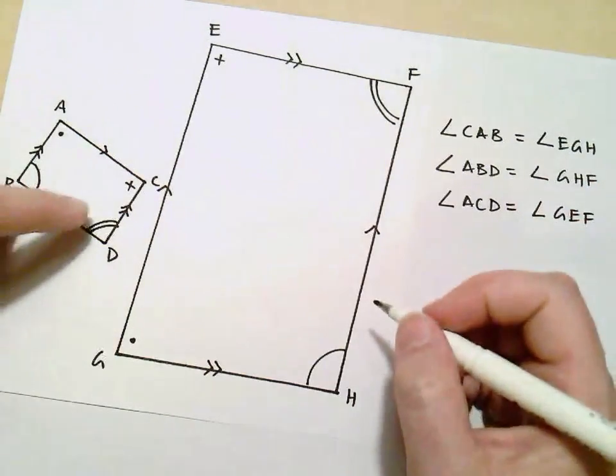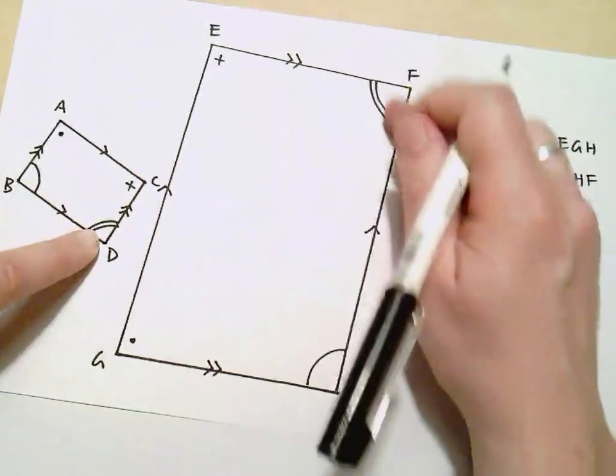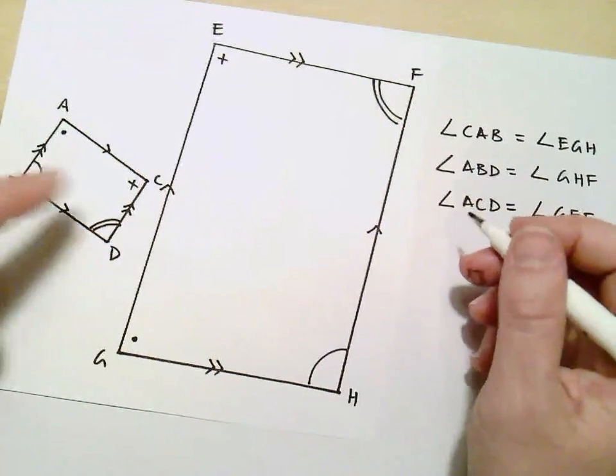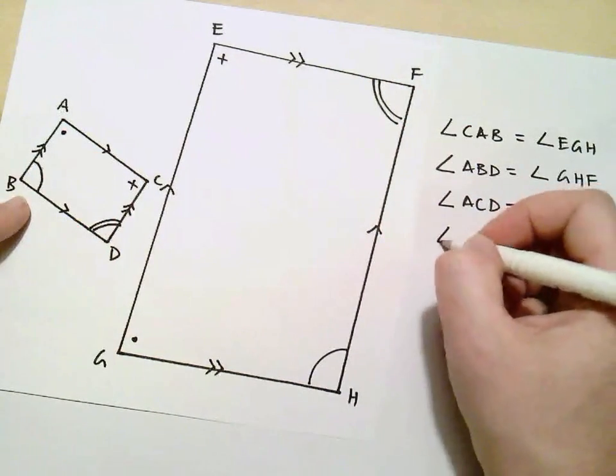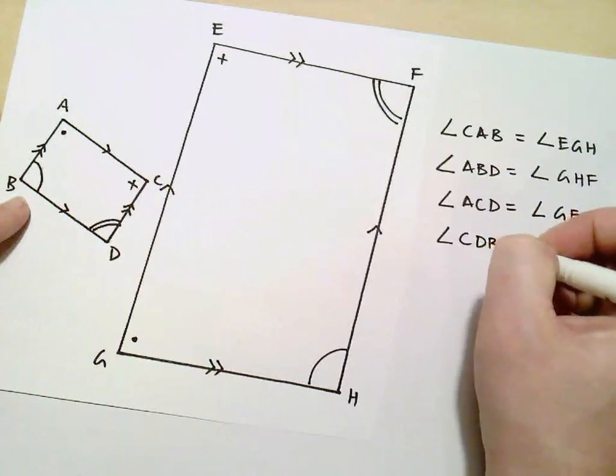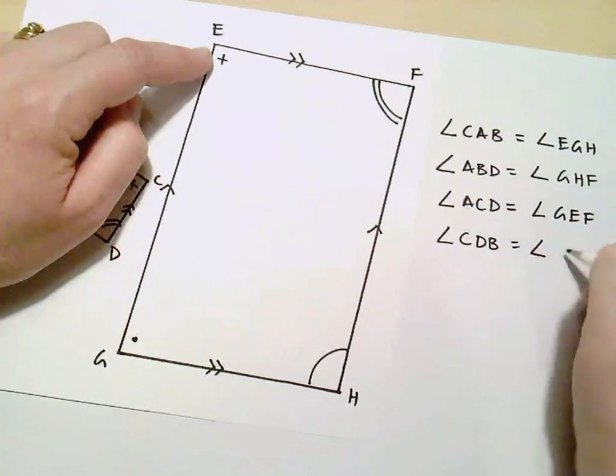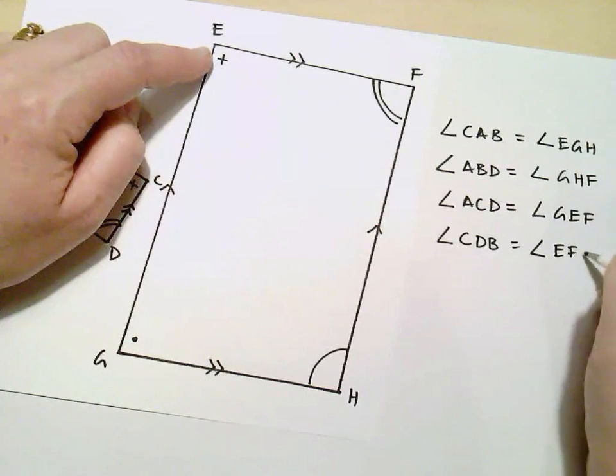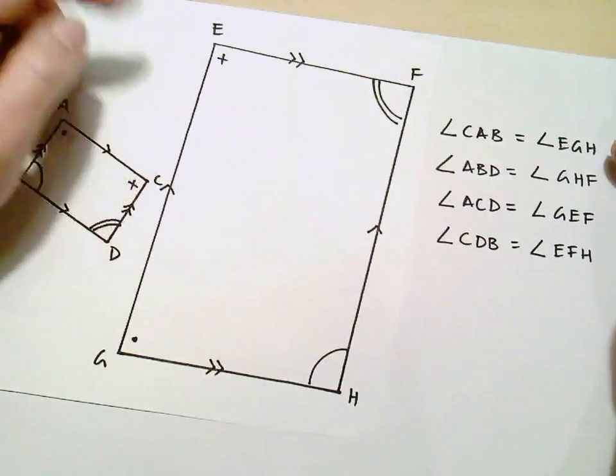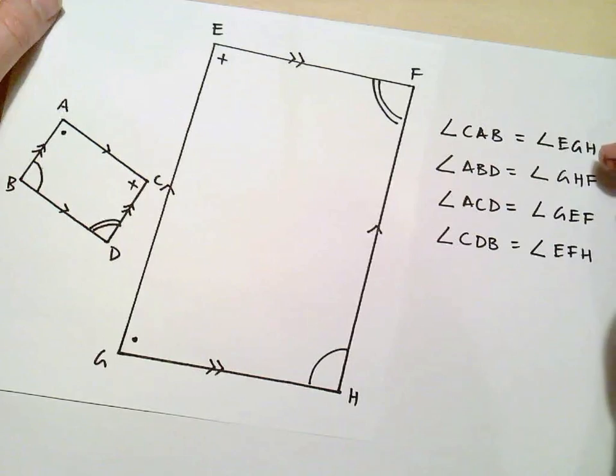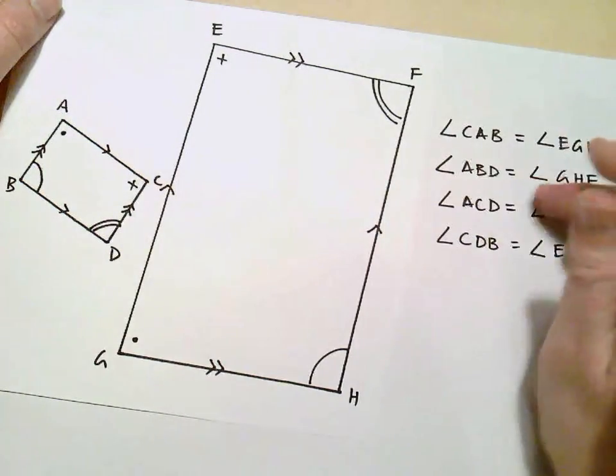And finally I can see that this angle here, the one with the double line, angle CDB is equal to angle EFH.